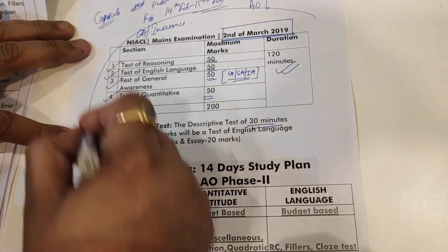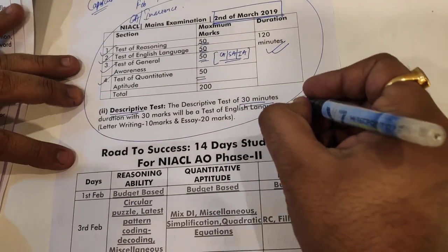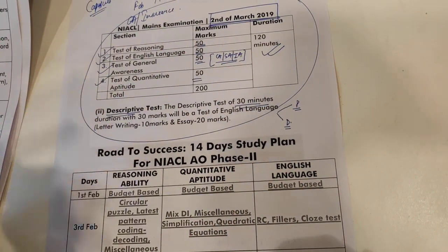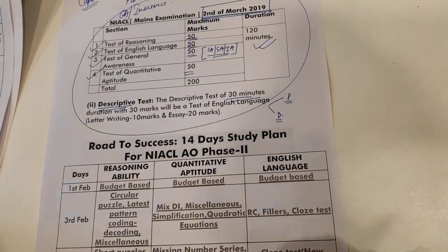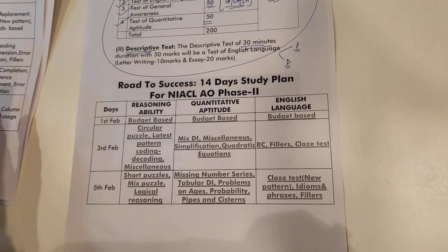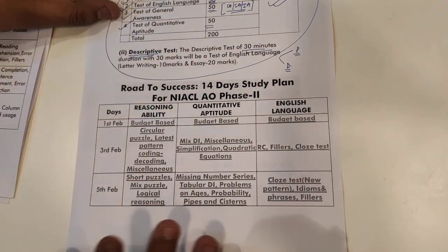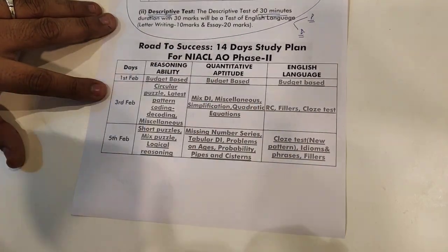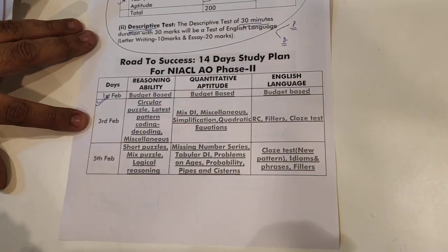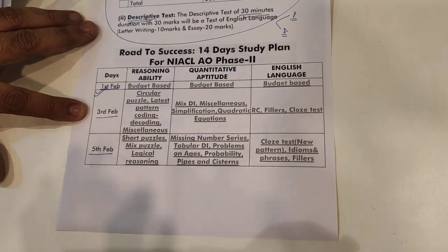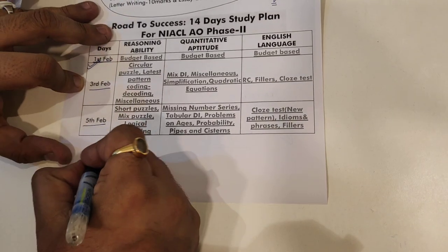After the first stage, you will have a descriptive test for 30 minutes. So the Mains exam has two parts — objective and descriptive. Topics for descriptive include day-to-day budget issues, constitutional matters, and Indian government issues. The plan has been launched starting 1st Feb, 3rd Feb, and 5th Feb for Reasoning, Quant, and English.